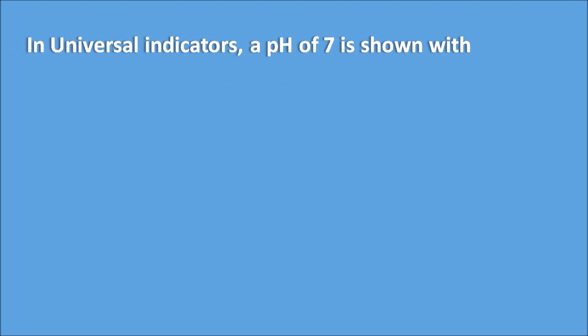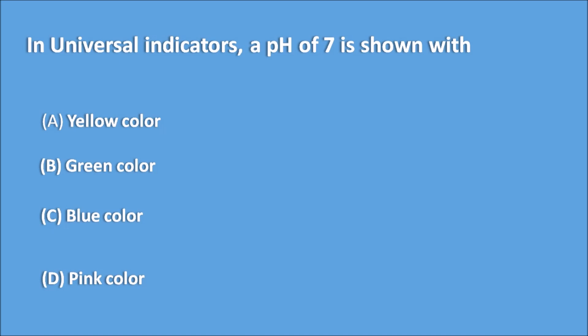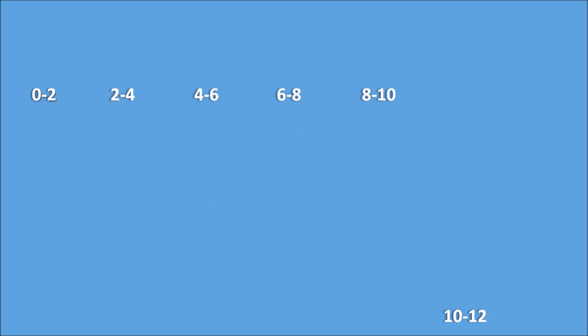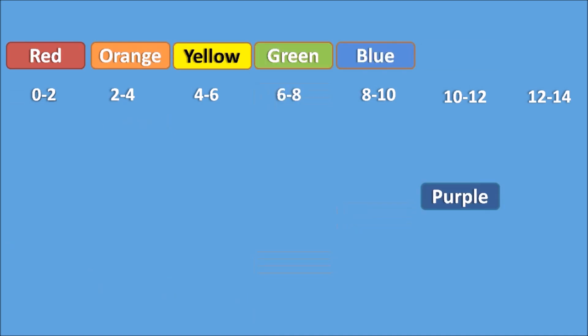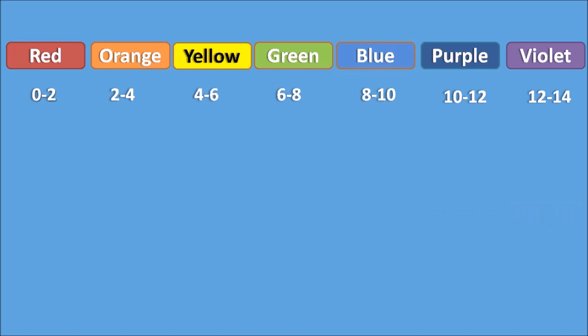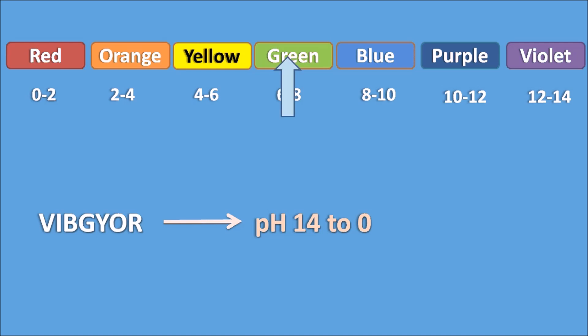First question: in universal indicators, a pH of 7 is shown by which color? Options are yellow, green, blue, and pink. The right answer is green. Dividing the pH scale from 0 to 14, the corresponding colors are red, orange, yellow, green, blue, purple, and violet. You can remember this using VIPGR (with indigo replaced by purple), going from pH 14 to 0. Since pH 7 falls between 6 and 8, it corresponds to green.